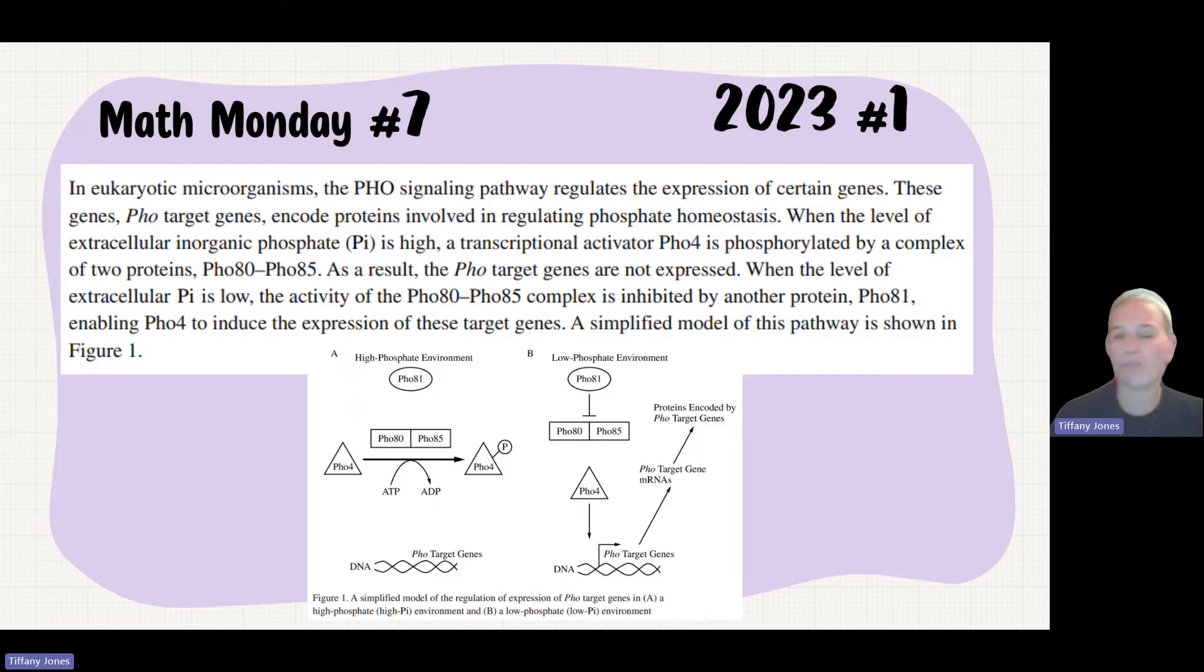So this is question one, a long reading prompt. If you want to pause it and read that, you're welcome to do so. But the gist is that it's about the PHO signaling pathway and how that regulates the different expression of genes.